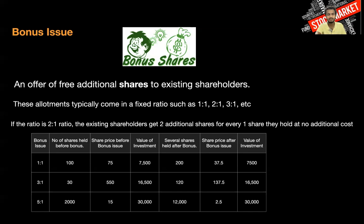After the bonus you get one additional share for every one share you hold, so now you have 200 shares — 100 plus additional bonus of 100. But your investment value remains the same, so the share price falls by 50 percent, from 75 it falls to 37.5 rupees. Similarly you can see for 3:1 and 5:1 ratios — how the share price falls but you get additional shares.